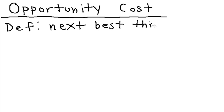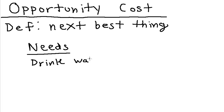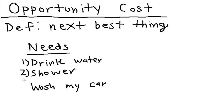Let's come up with this imaginary example. Suppose I have three needs. My first need is to drink water. Second need is to shower. And my third need is to wash my car. And these are ranked in order. So, the highest need I have is water. To drink water. Second is to shower. And the third is to wash my car.